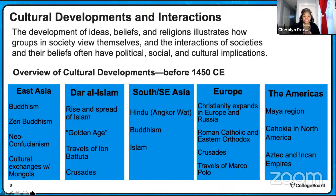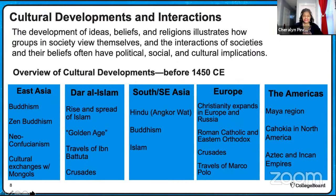Under Dar es Salaam, we see the rise and spread of Islam, and in the time period before 1450, this is where Islam reaches its golden age. Make sure you understand what the golden age of an era means, because we see that a lot in history. We also learn about the travels of Ibn Battuta — a traveler from Morocco who traveled thousands of miles throughout Africa, Europe, and Asia. If you're not sure who Ibn Battuta is, put that on your list of things to study, because you definitely want to know the impact his travels had on Dar es Salaam. And then under Dar es Salaam, the Crusades — make sure you understand what's going on there.